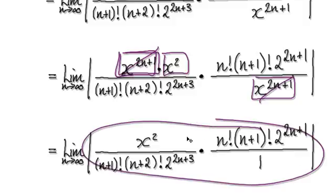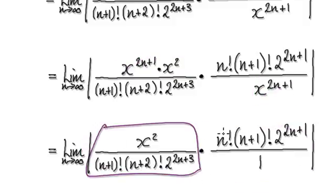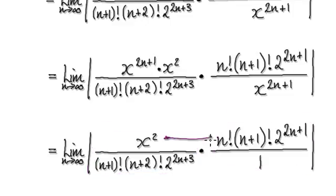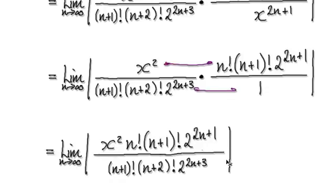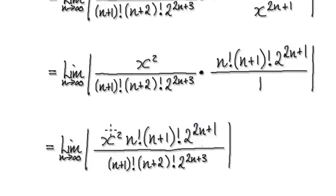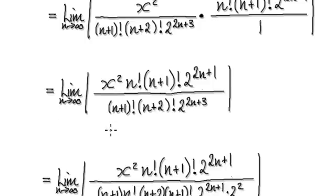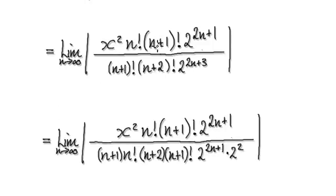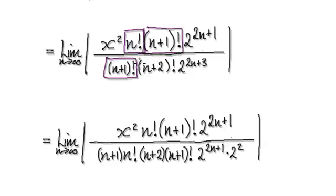Leaving you with this. Now you've got one fraction multiplying another fraction, so let's tidy things up and merge these two together. That will give you this whole thing here. Looking at this, you should have a hunch that if you manipulate it correctly, this will somehow cancel out with this, and then this will somehow cancel out with this.